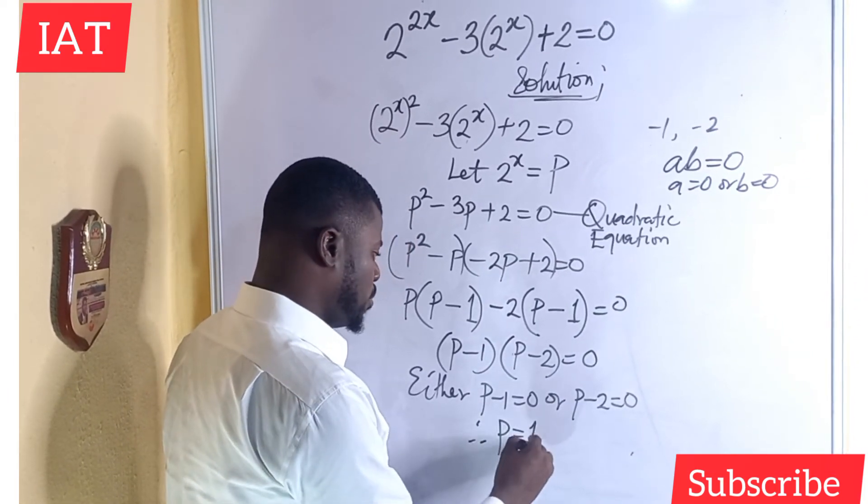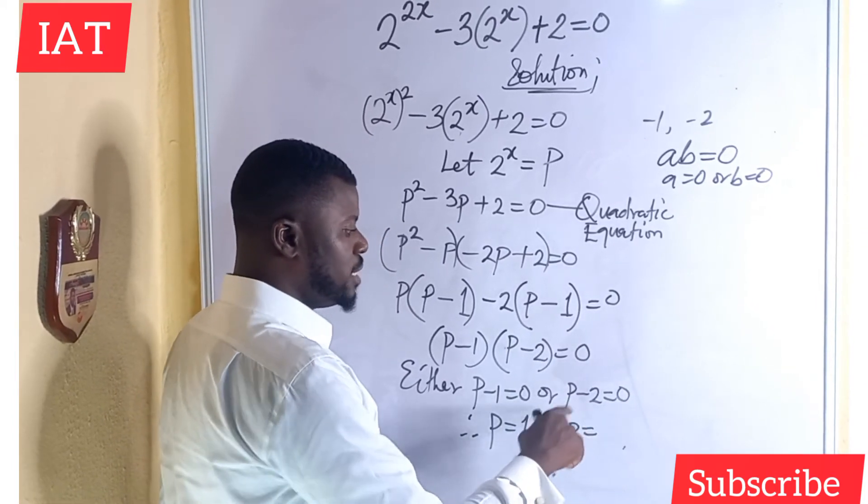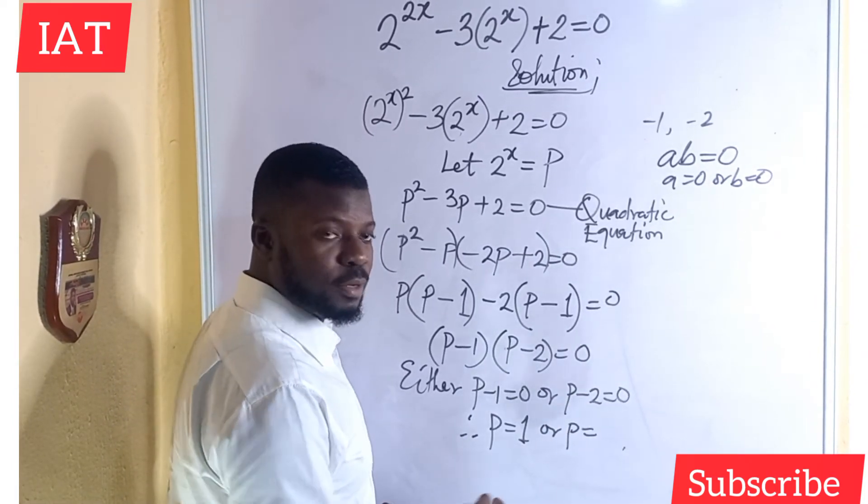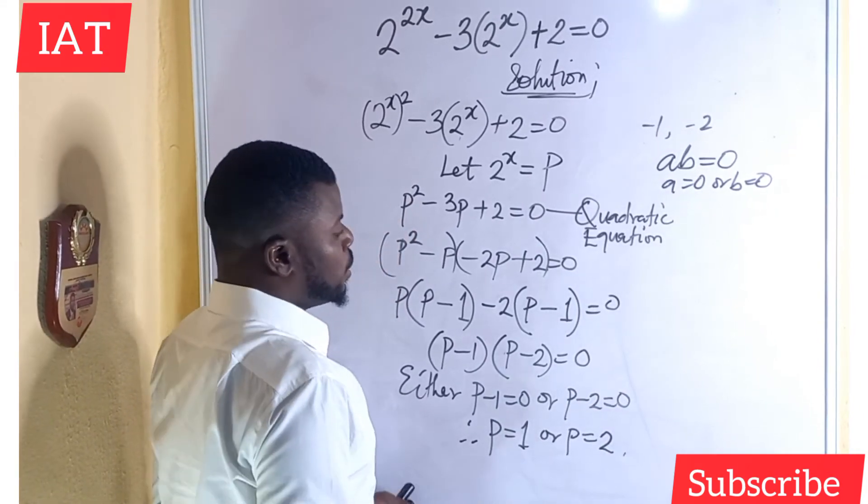it simply means that p is equal to, by the time minus 1 crosses, it becomes plus 1 or p would be equal to, by the time this minus 2 crosses to the other part, it becomes plus 2. So,